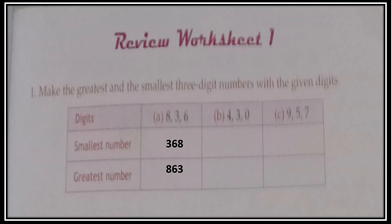Now Part B — digits 4, 3, 0. Children, here 0 is mentioned, so you will never write 0 at the first place. Write the next smallest digit first, then 0 afterward. So the smallest number is 304 and the greatest number is 430. Now Part C — digits 9, 5, 7. The smallest number will be 579 and the greatest number will be 975.